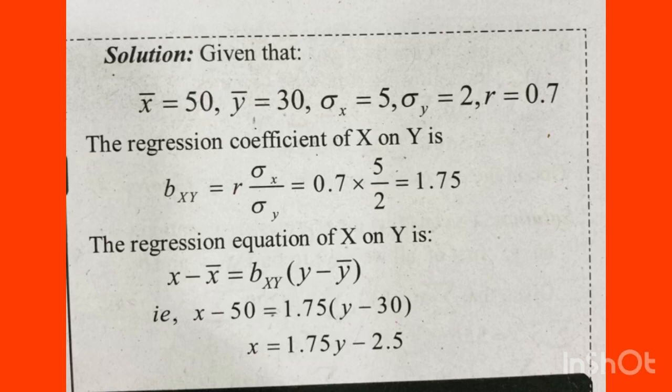Now we apply the regression equation for x on y. The equation is: x minus x̄ is equal to bxy into y minus ȳ. Substituting, with ȳ equal to 30 and x̄ equal to 50, the equation becomes x is equal to 1.75y minus 2.5.